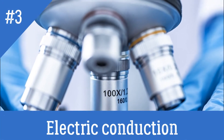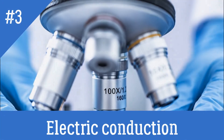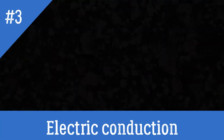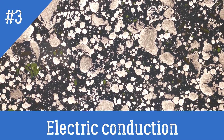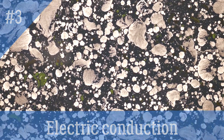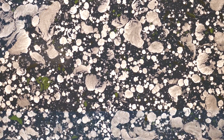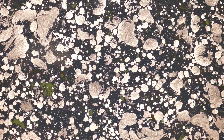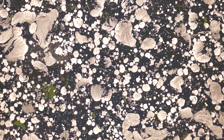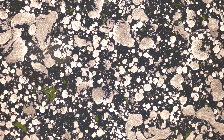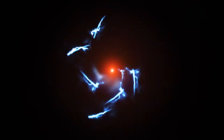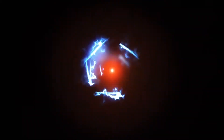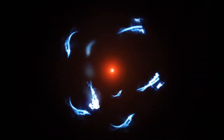3. Electric conduction: Most metalloids are semiconductors. They transmit electricity in only one direction, instead of being complete conductors, and in that they are distinguished from metallic elements. However, they are much better conductors than non-metal elements, so they are often used in the electric manufacturing industry.